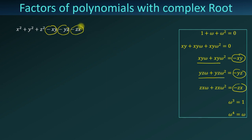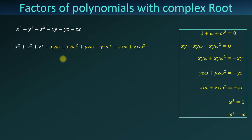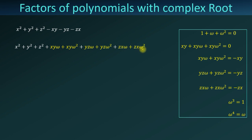We can replace the value of negative xy by this expression, negative yz by this expression, and negative zx by this expression. So we will have x squared plus y squared plus z squared plus xy·omega plus xy·omega squared plus yz·omega plus yz·omega squared plus zx·omega plus zx·omega squared.